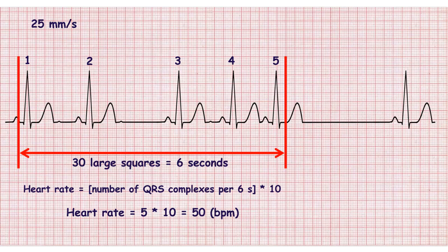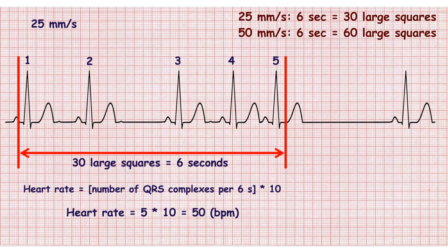The marker method is the best for calculating the heart rate in patients with irregular rhythms. You should count the number of QRS complexes during six seconds and multiply it by 10. On ECG recorded with a speed of 25 millimeters per second, 30 large squares correspond to 6 seconds. If ECG speed is 50 millimeters per second, 60 large squares correspond to 6 seconds.